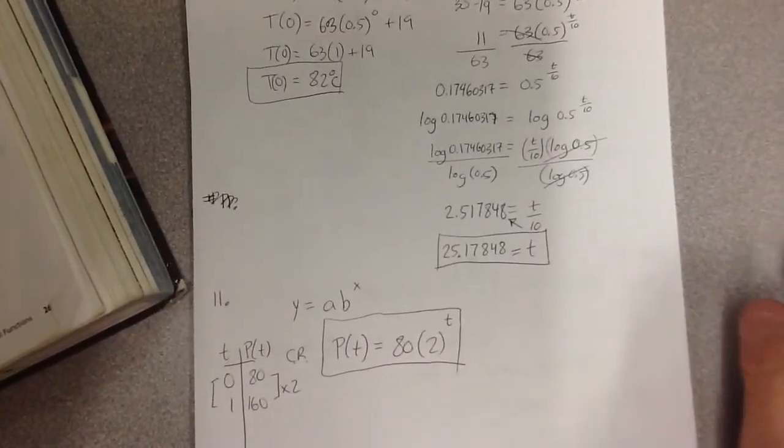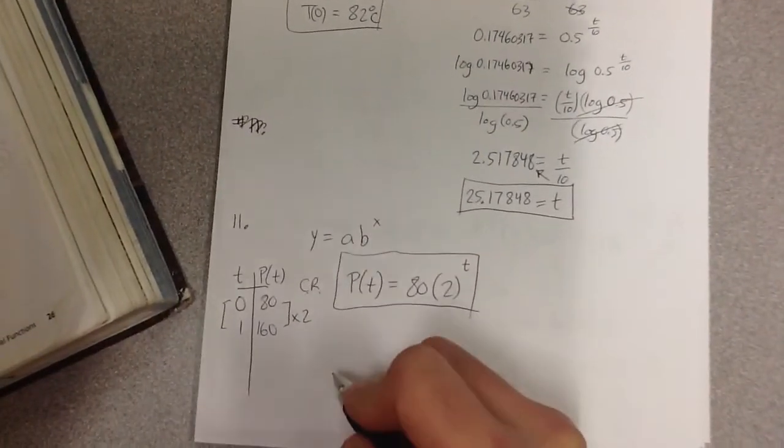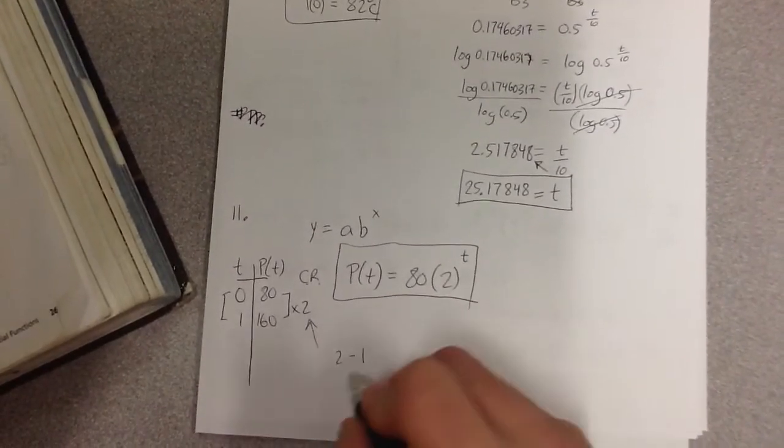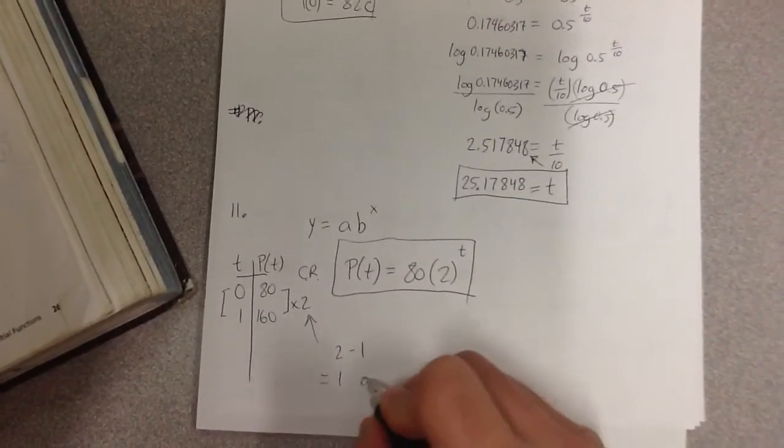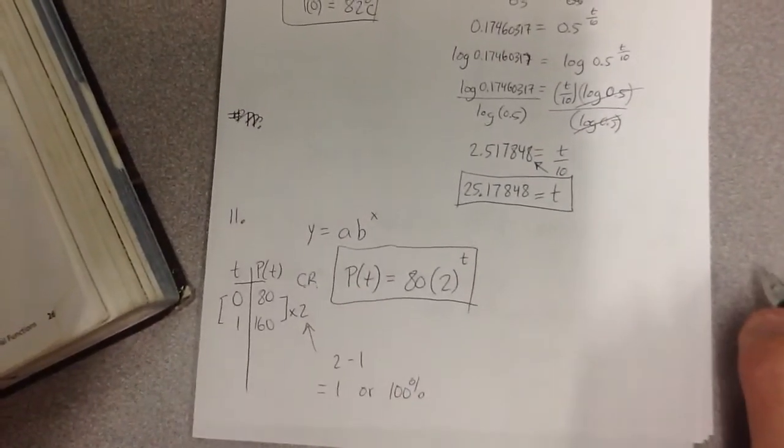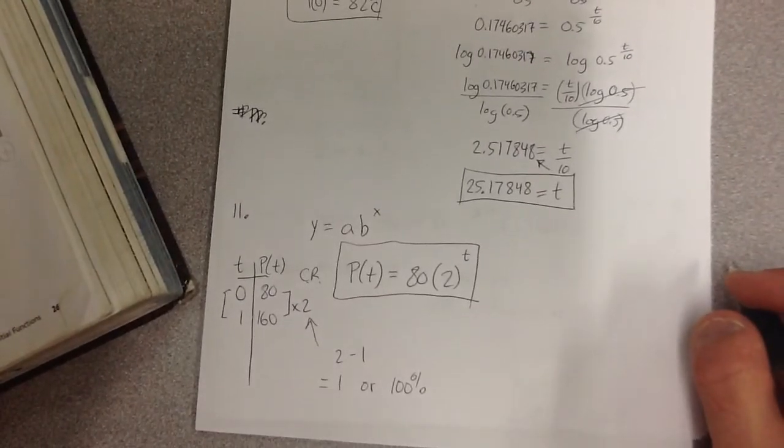Now, when it asks you, what's the growth rate, just remember how to figure out the growth rate. The growth rate is always subtract one from the common ratio. So the growth rate is one or what does one mean in percentage? The growth rate is a hundred percent. It grows by a hundred percent each year.